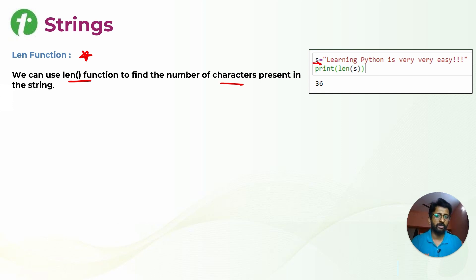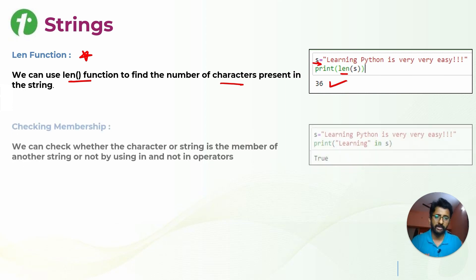For example, I am writing any variable with one line of strings with n number of words. So whenever I am doing len of s, it will tell that it has total 36 characters inside that particular string.